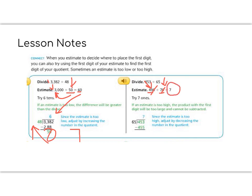So if we multiply 65 times 7, we get 455. And 455 is more than 453, so that won't work. My estimate is too high. So in this case, I would need to jump down and go to a 6.